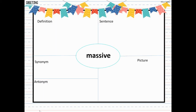Our next word is massive — M-A-S-S-I-V-E — and it is also an adjective. Massive means large. I had a massive blow-up for my birthday party, so a large inflatable jumping thing. I have a massive amount of candy from Easter — a large amount. So the word massive is an adjective and it means large.